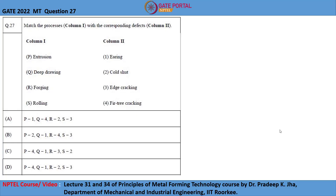Let me study the 27th question of GATE 2022. Match the processes shown in column 1 with the corresponding defects shown in column 2.